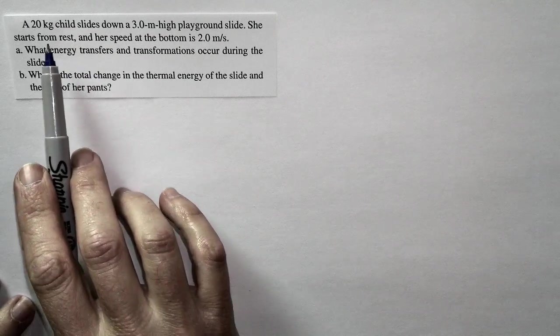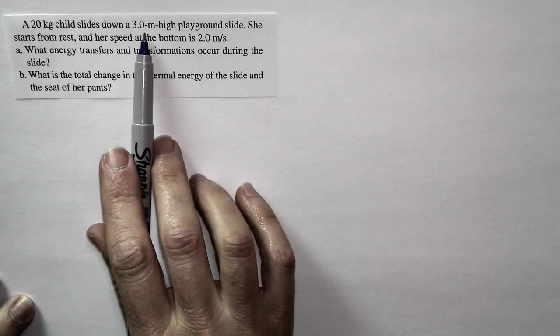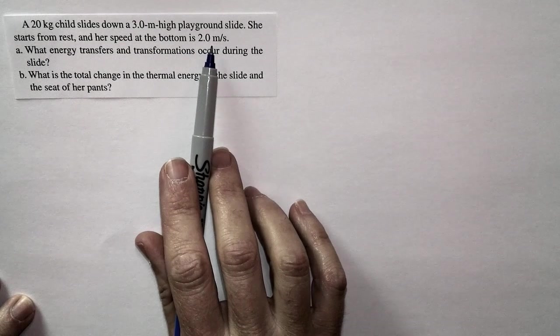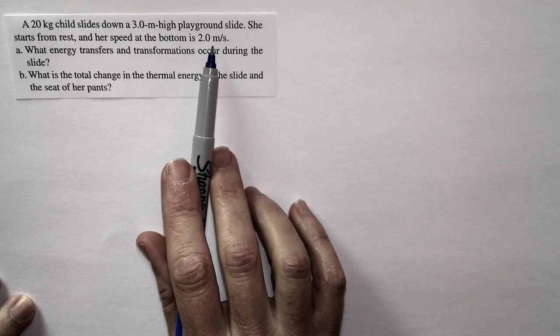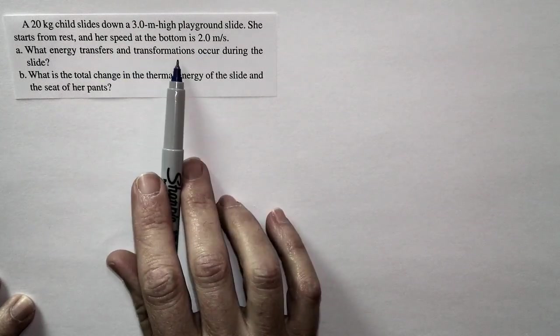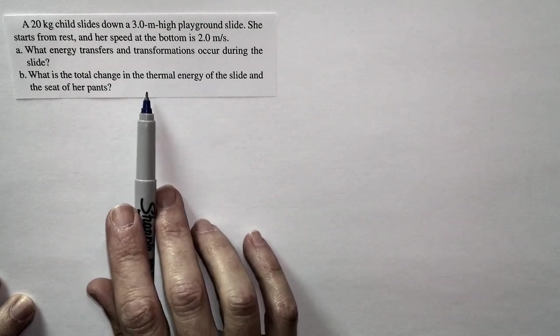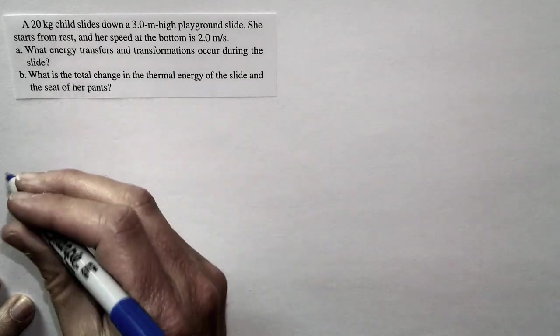Let's take a look at what this problem is asking. We have a 20 kilogram child slides on a three meter high playground slide. She starts from rest and her speed at the bottom is two meters per second. What energy transfers and transformations occurred in the slide? What is the total change in thermal energy of the slide and the seat of her pants?